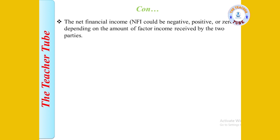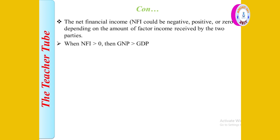If net factor income is greater than zero, then GNP is greater than GDP.